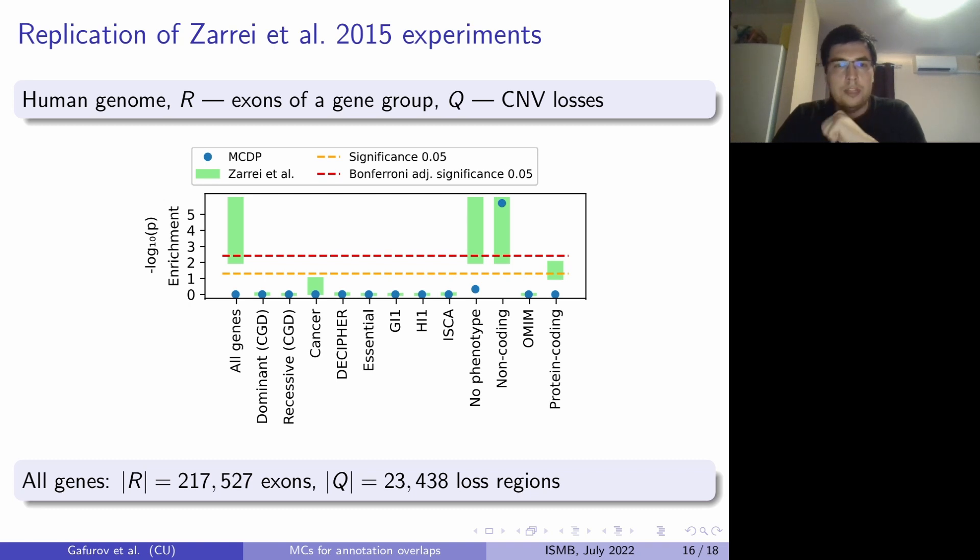And one thing that I want to point out from that, besides the fact that we are mostly in agreement, is that this dataset, all genes, contains all the human exons, which are more than 200,000 of them in the RefSeq, and also 23,000 of loss regions. So our method is applicable to large datasets such as all human exons.